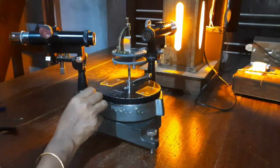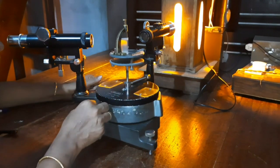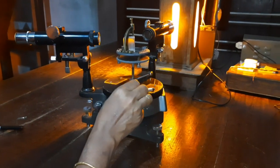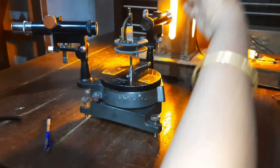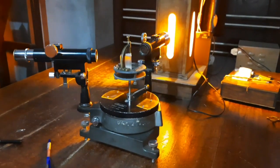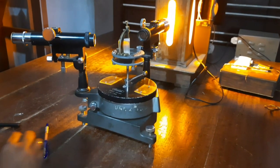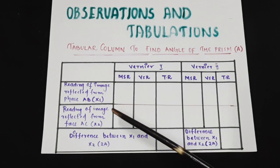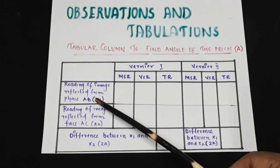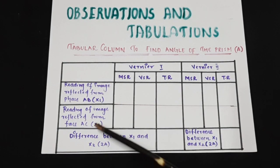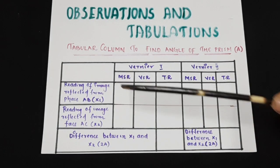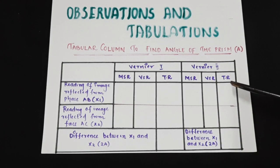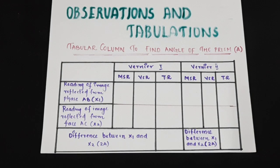Once you observe it, clamp the main screw. Use the fine screw to exactly coincide with the cross line. Then again take vernier 1 reading — MSR and VSR — then vernier 2 reading — MSR and VSR — to get the total reading. The difference between the two readings will be twice the angle of prism, so we can calculate angle A. In the observation column, take the vernier 1 and vernier 2 readings for the image reflected from face AB, then for face AC. The difference between these readings gives twice the angle of prism, 2A.